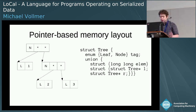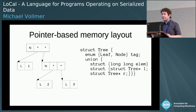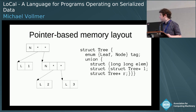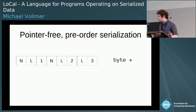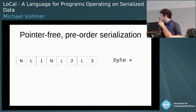Normally in a programming language, you represent a tree-like structure where the different objects are separate objects in memory. There will be some sort of tag at the beginning for a node, and then the subtrees will be represented by a pointer. But this isn't the only way you could represent this data. A pointer-free preorder serialization of that same data could look something like this, where the N and the L are tags that represent whether something is a node or a leaf, and the ints are just written right in line. These are just bytes.